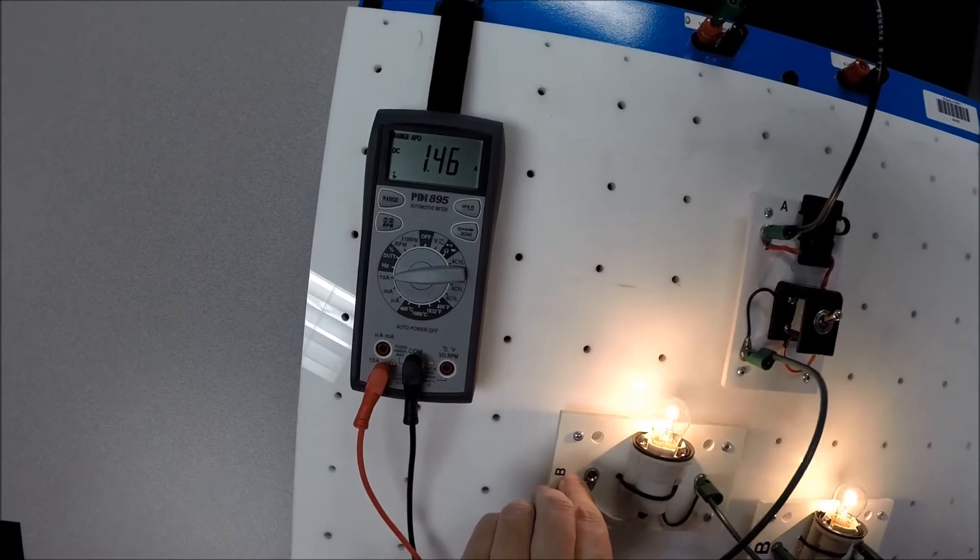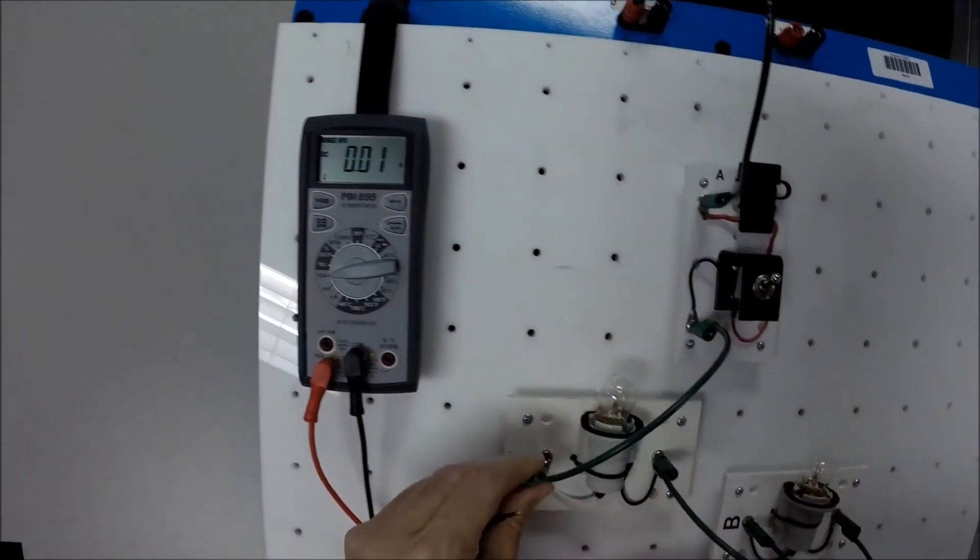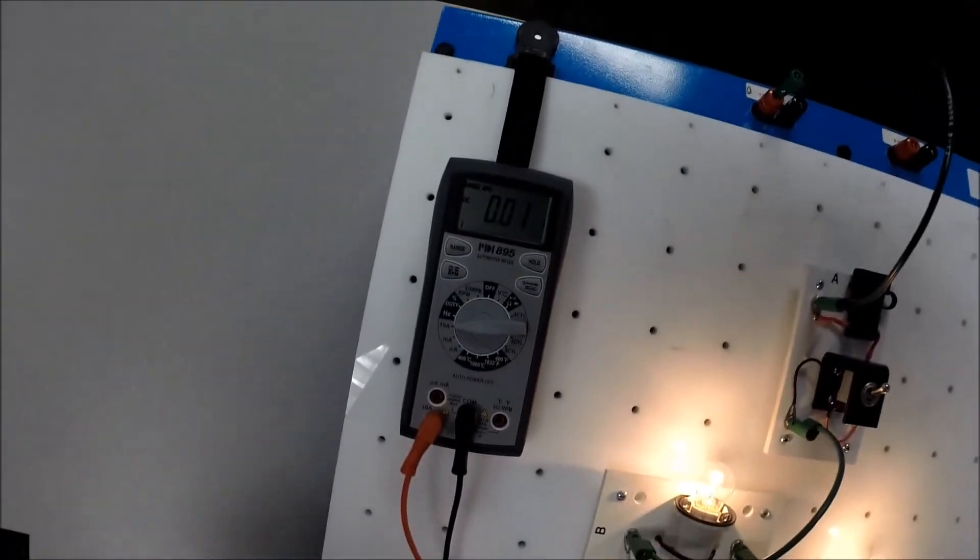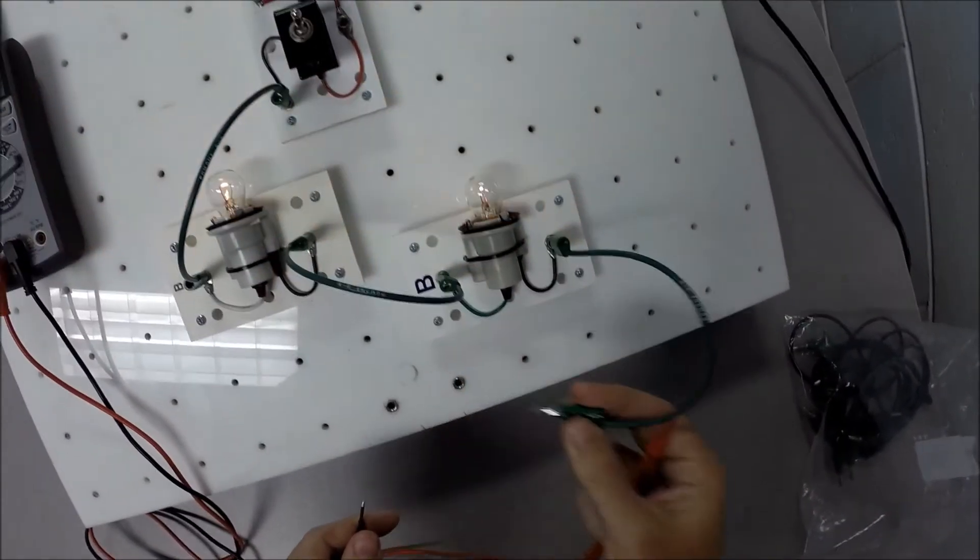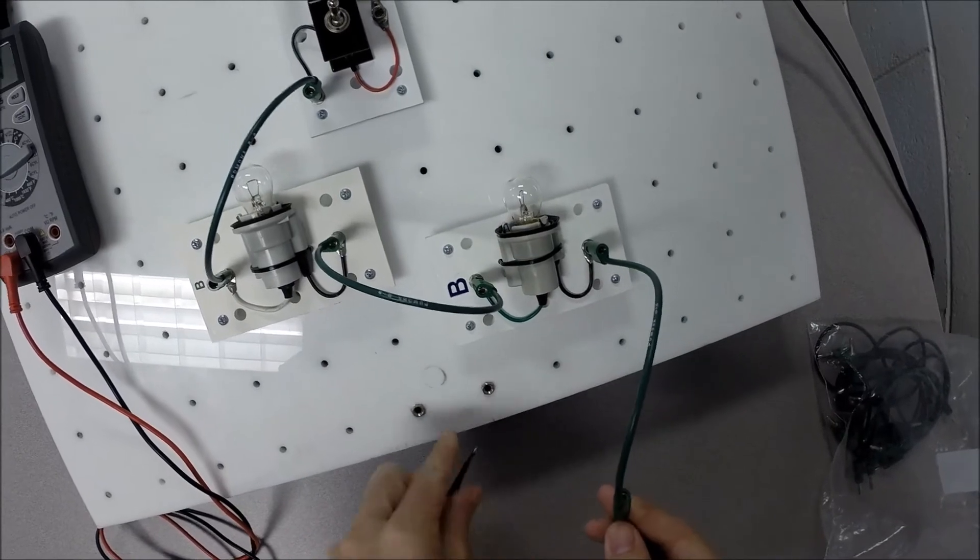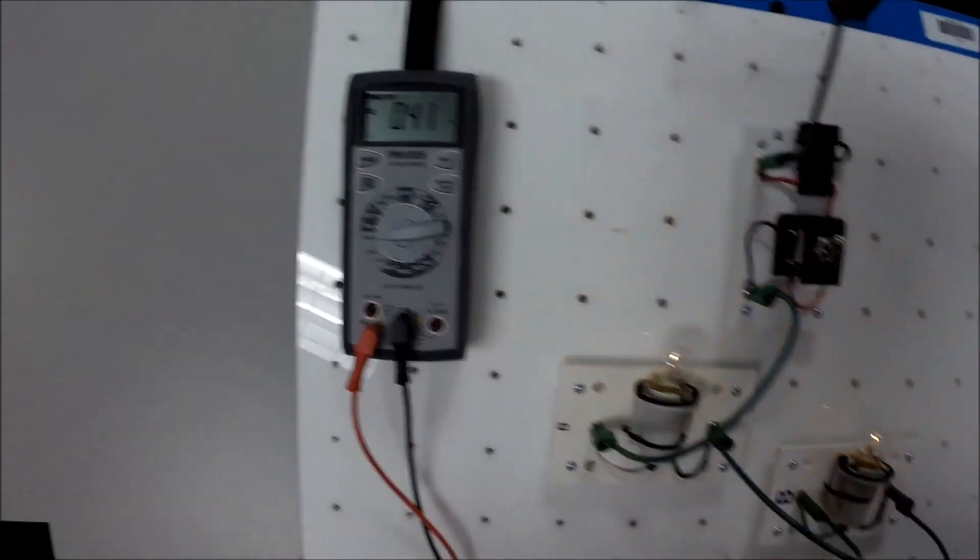But that's 1.4446, somewhere in that neighborhood amps. I'm going to hook this circuit back up and I'm going to go to a different place in the circuit. Let's go right down here to the very, very end. Here where our ground connection is. We're going to hook up down here. And look, 1.46 amps. It's the same.